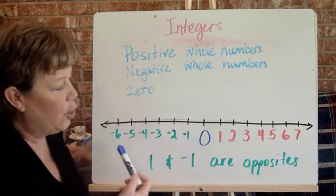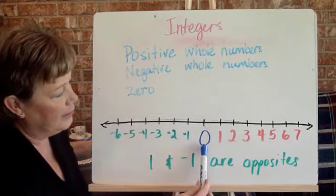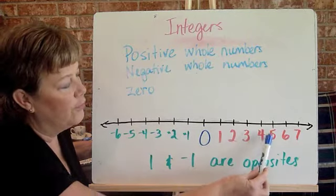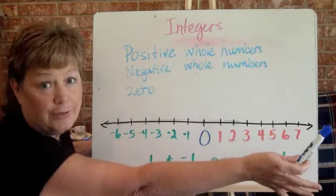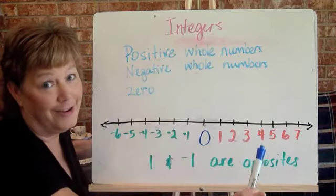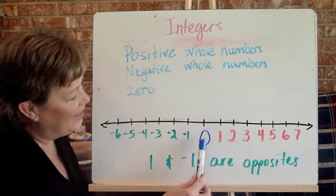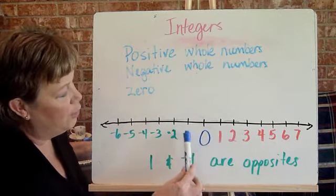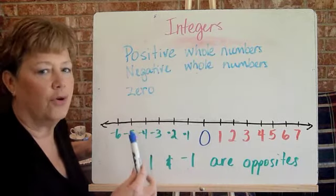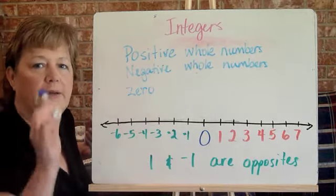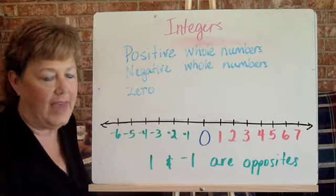So when you're on a number line you look at zero, one, two, three, four, five, six, seven into infinity and beyond like Toy Story, and also zero, negative one, negative two, negative three, negative four, negative five, all the way to infinity that way.